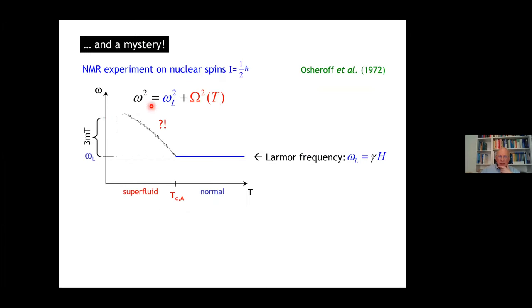In the early days right after the discovery, there was actually a mystery. The experiments at that time were done by nuclear magnetic resonance, the perfect tool to work with nuclear spins one-half. They found this is the frequency as a function of temperature. In the Fermi liquid, the resonance frequency is of course the Larmor frequency. But as they entered into the A phase, something strange happened. The resonance increased.